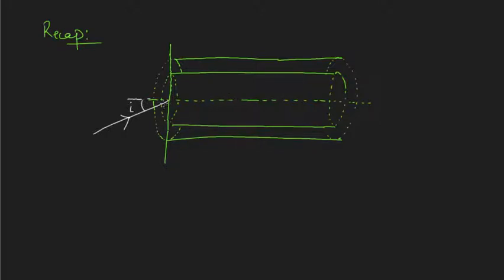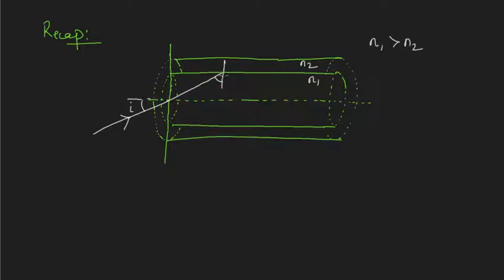If the light is launched at an angle i inside the fiber, this is the core of the fiber with refractive index n1 and this is the cladding of the fiber with refractive index n2. In order for the ray to move from denser to rarer media, n1 should be greater than n2, because when light strikes the core-clad interface it moves from denser to rarer media, and when these conditions are satisfied it undergoes total internal reflection.